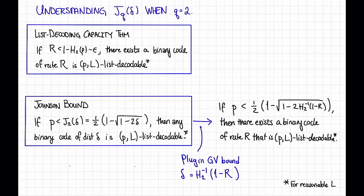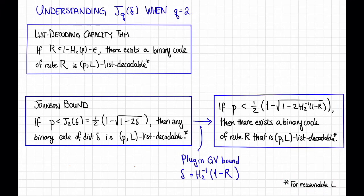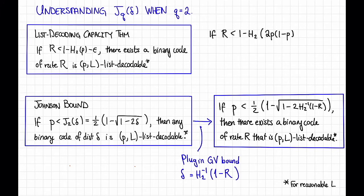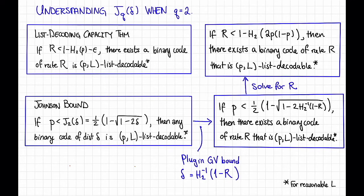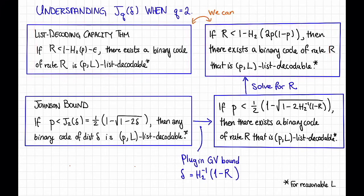For a reasonable list size l. To make this look more like the capacity theorem statement, let's solve for r. When we do that, we get: if r is less than 1 minus the binary entropy of 2p times 1 minus p, then there exists a binary code of rate r that is p-l list decodable for reasonable list sizes. Now these two statements — from the capacity theorem and the Johnson bound — can be directly compared, because they're both of the form: if the rate isn't too big, then there exists a list decodable binary code of that rate.